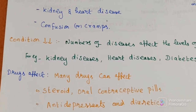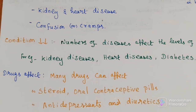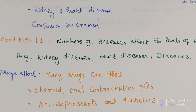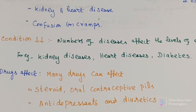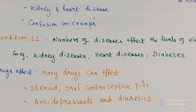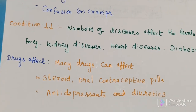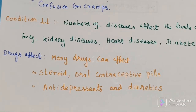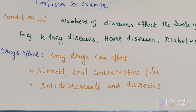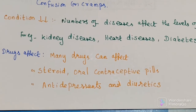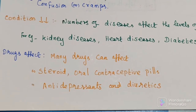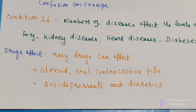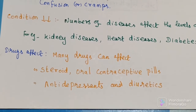Can any drugs affect the electrolyte levels in blood? Many drugs can affect electrolyte levels. For example, certain drugs like steroids and oral contraceptive pills can increase the level of sodium and chloride. On the other hand, drugs like antidepressants and anti-diuretics can decrease the level of sodium and chloride.